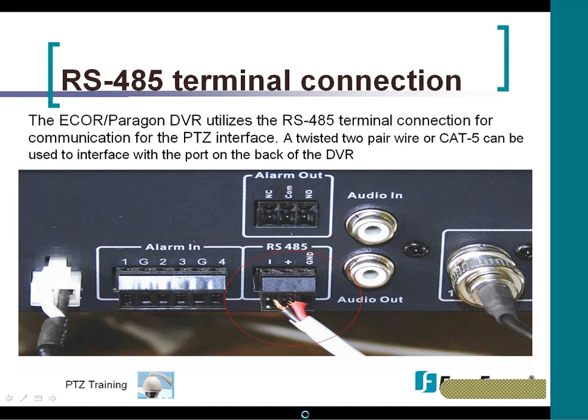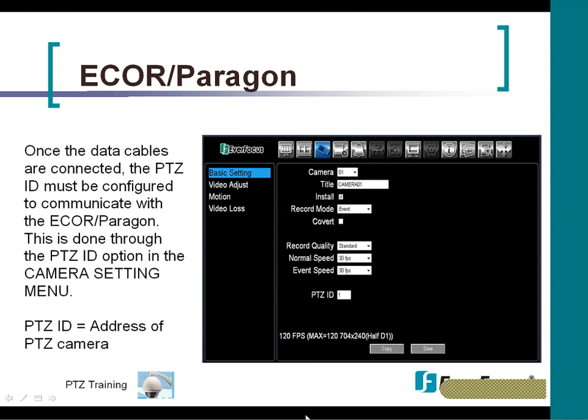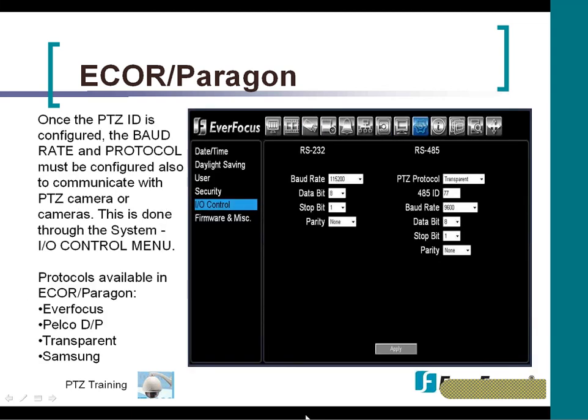Once it's hardwired from the dome into the back of the DVR, you're going to have to set up a couple of parameters inside the DVRs themselves. To set the PTZ ID for communication between the DVR, this is done under the camera setting. You'll see that the PTZ ID is at the bottom, and that's where you would add the address of the PTZ camera.